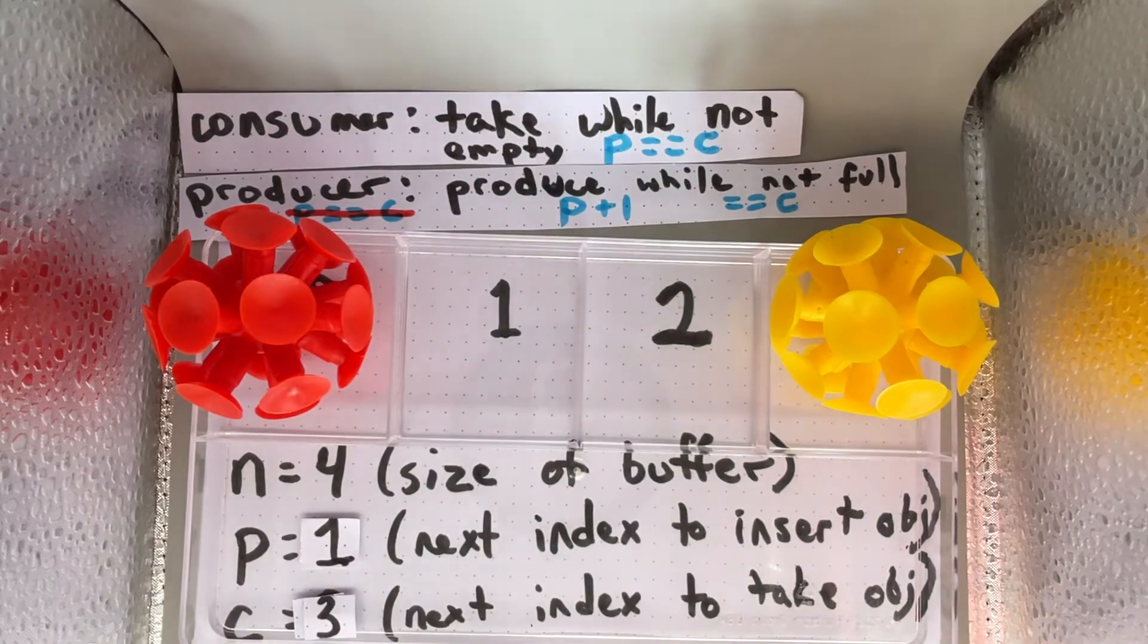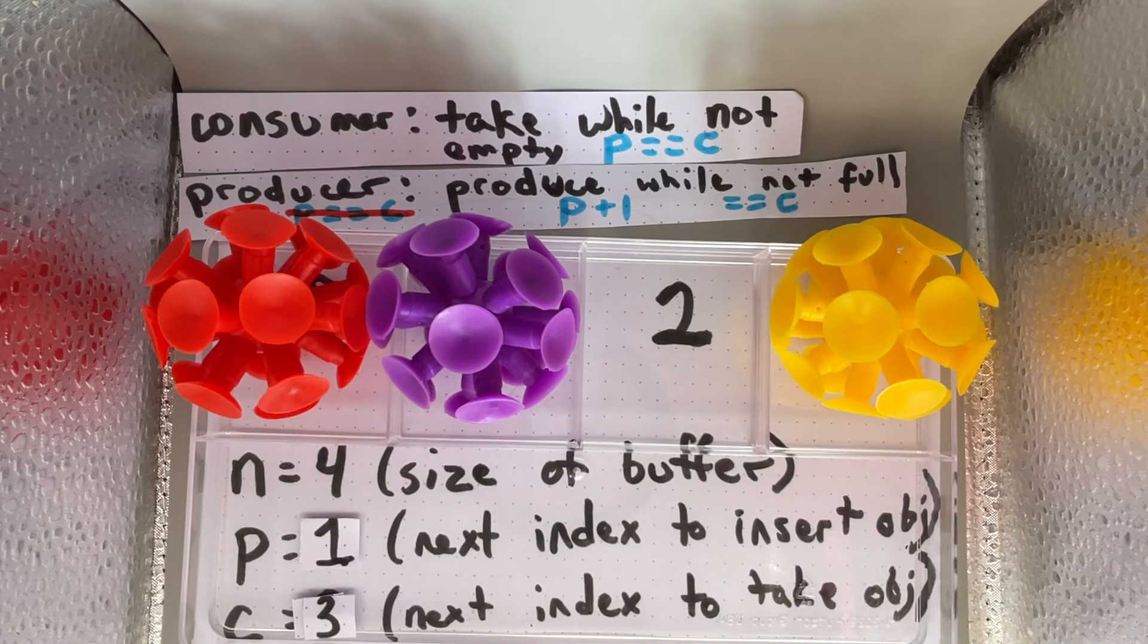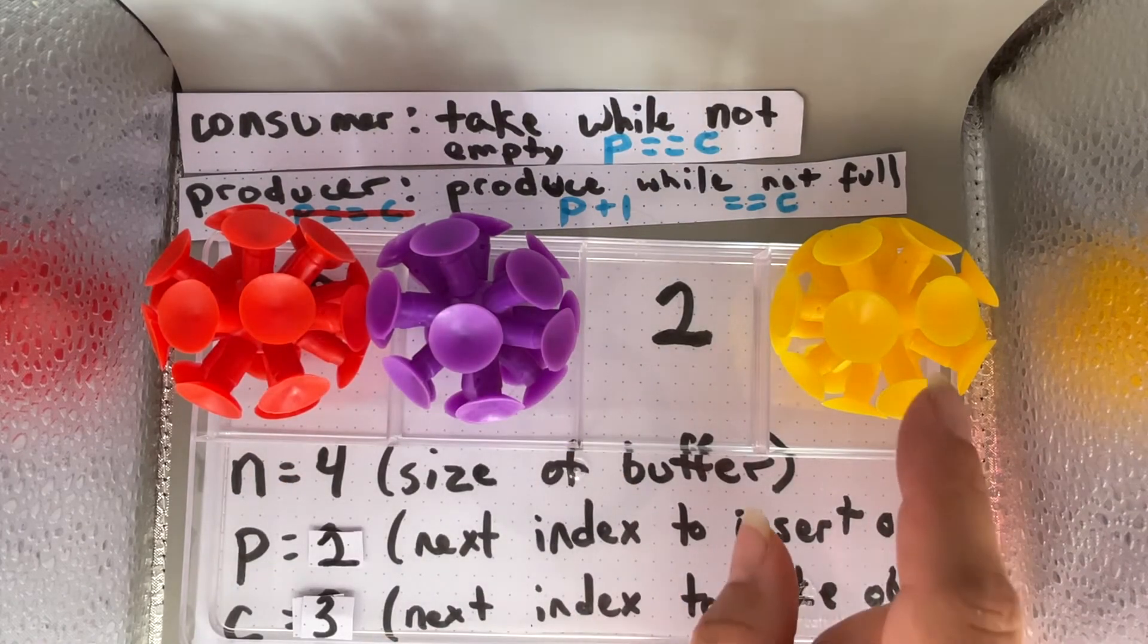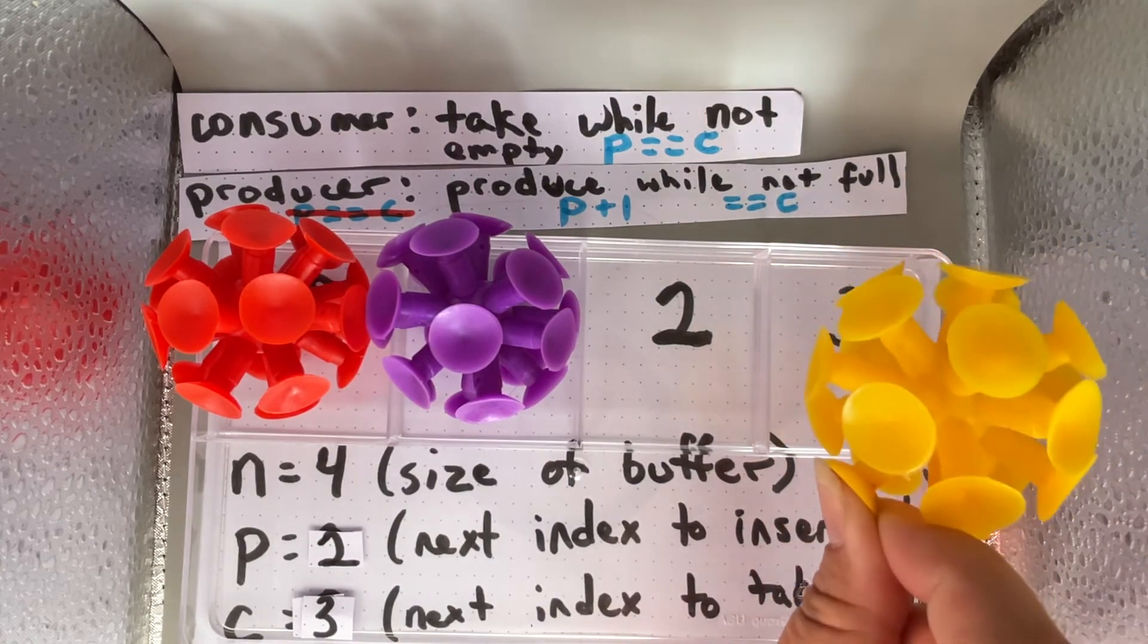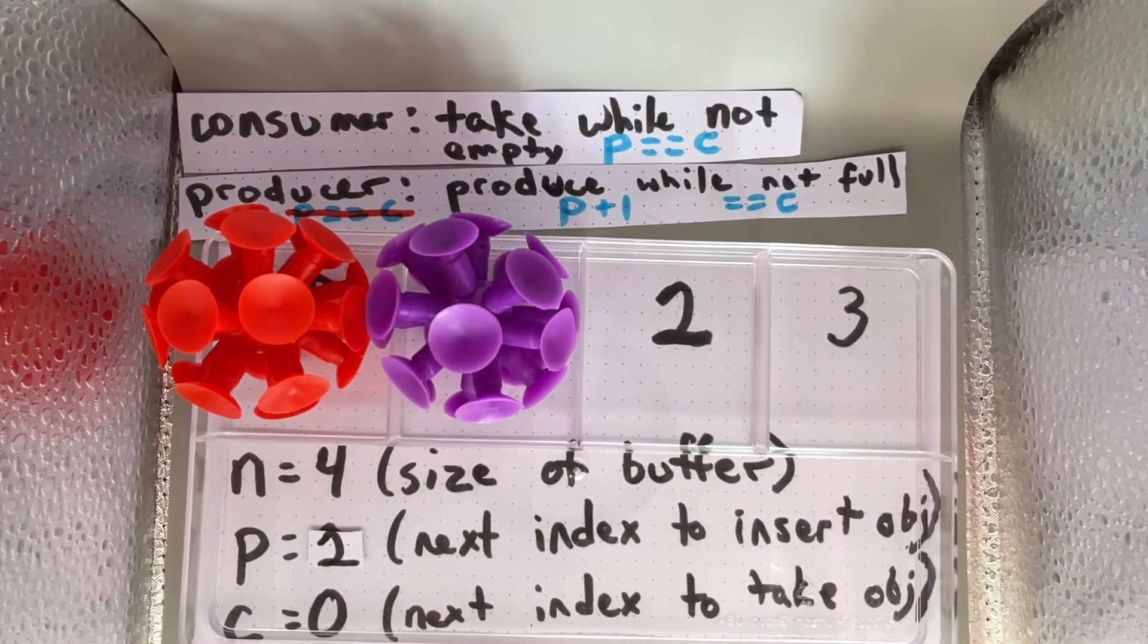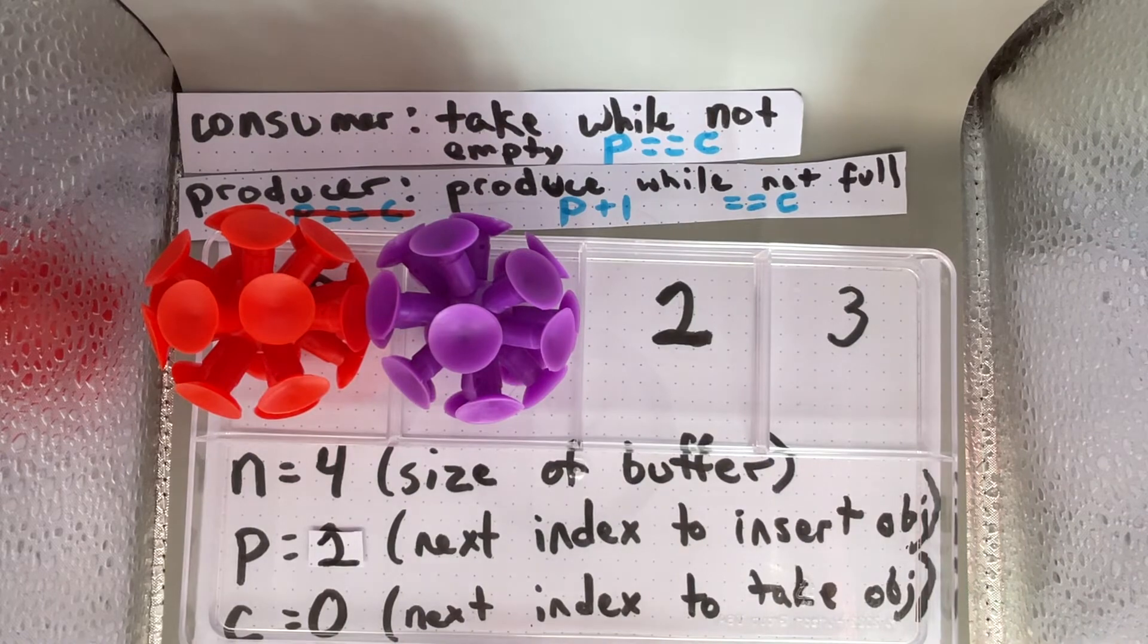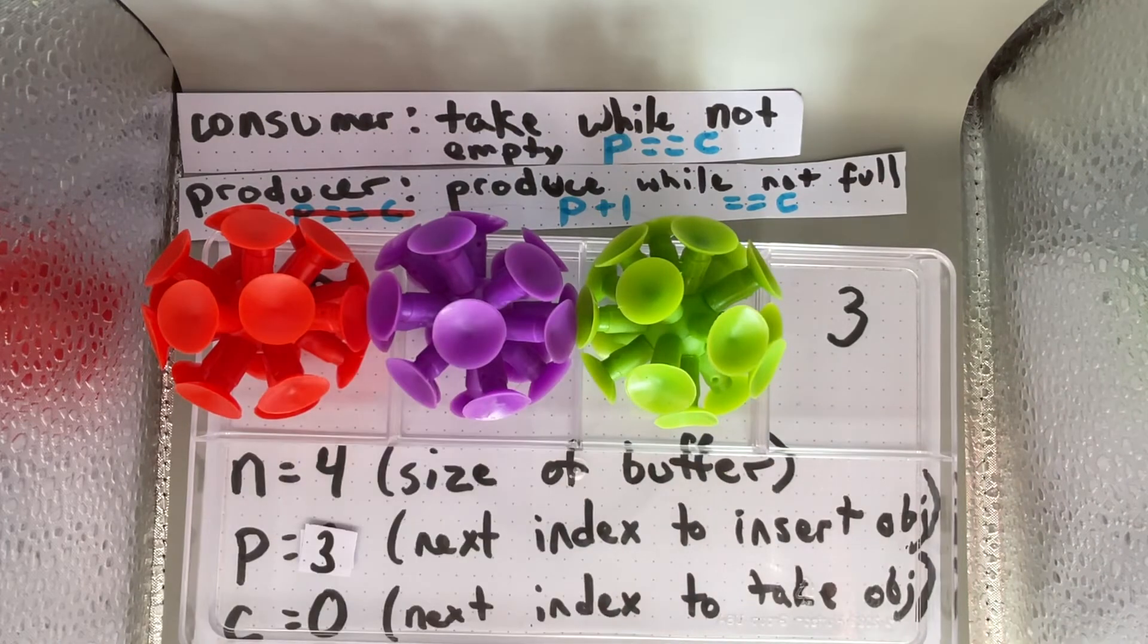The producer will put in an object that raises its value to 2. When the consumer takes out object 3, using modulo arithmetic, the next object the consumer can take out is object 0. The producer can put an object at 2, resulting in the next object being 3.